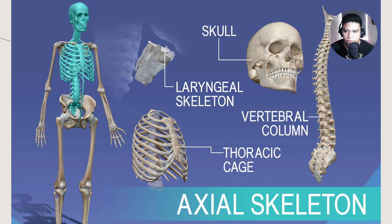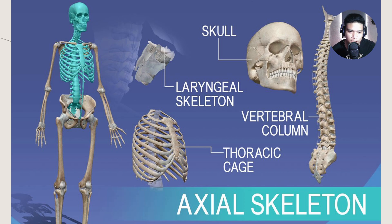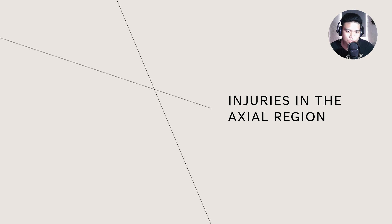Here is a picture I have included. The axial skeleton includes the skull, the laryngeal skeleton found within our neck near our vocal cords, the thoracic cage — our ribs — and lastly the vertebral column. Our backbone or vertebrae is also included as a section of the axial region.